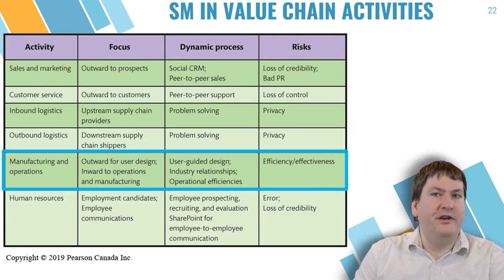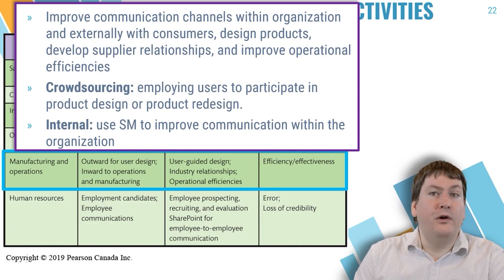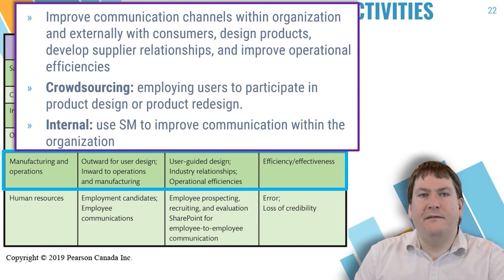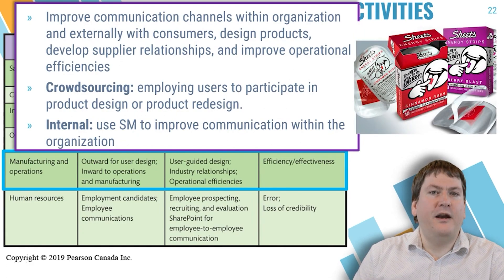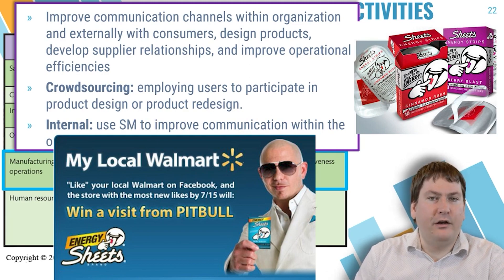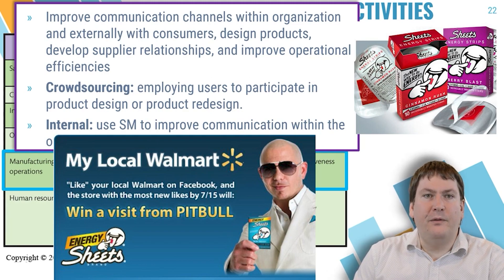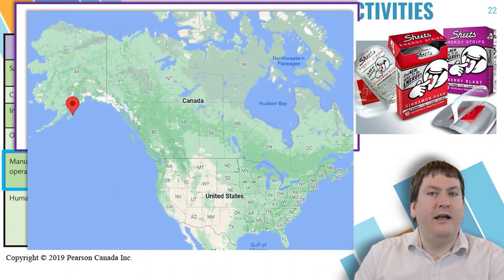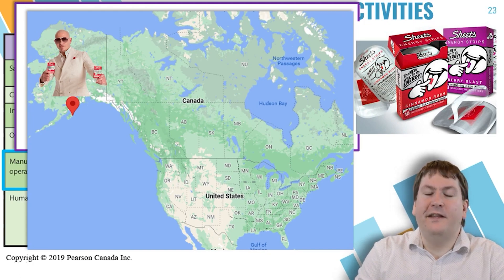In terms of manufacturing and operations, social media is not normally used in the manufacturing process, but it is used in the product design phase and for improving communication channels. A company might use social media to crowdsource feedback on potential product designs. A famous example is the social media campaign by Energy Sheets and Walmart using a Facebook poll to let users vote on which Walmart location PitBull — a famous rapper — would visit. Internet users banded together to vote for the most remote location they could find: a Walmart in Kodiak, Alaska, as a joke. To PitBull's credit, he did eventually visit that store.